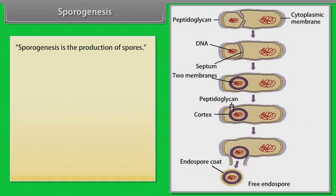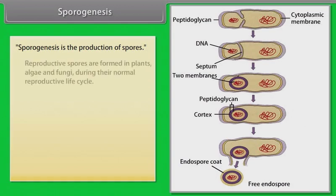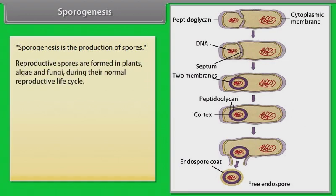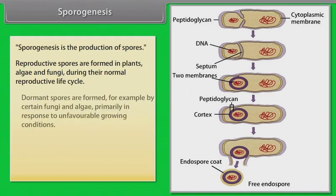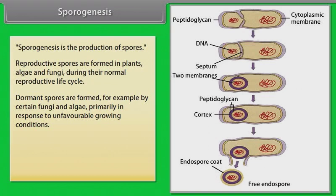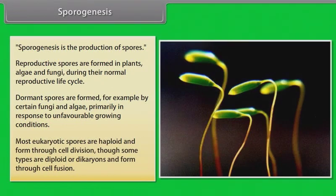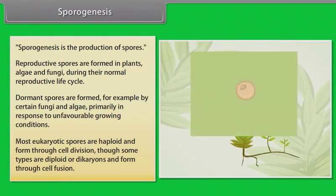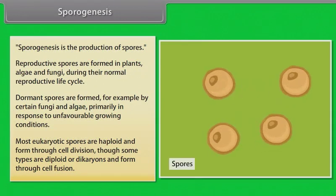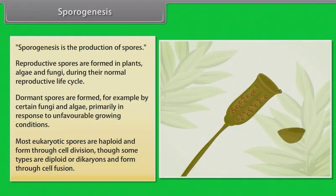Sporogenesis is the production of spores. Reproductive spores are formed in plants, algae and fungi during their normal reproductive life cycle. Dormant spores are formed, for example, by certain fungi and algae, primarily in response to unfavorable growing conditions. Most eukaryotic spores are haploid and formed through cell division, though some types are diploid.